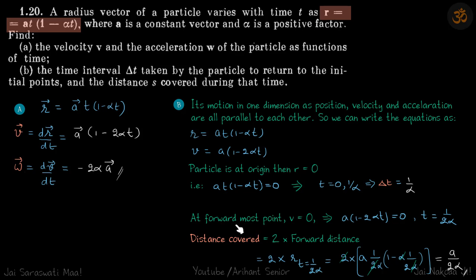So at what time did the particle reach its forward most position? It happened when velocity was 0. So if you put velocity as 0 you will get t equals 1 by 2 alpha. So at 1 by 2 alpha the particle reached its maximum position before it turned back. So if you put t equals 1 by 2 alpha in the first equation you will get the maximum displacement of the particle. Two times that - it goes forward and comes back - that will be our distance traveled. So we put the value of t equals 1 by 2 alpha in r. So that is the forward distance traveled. Two times that, that is our answer.